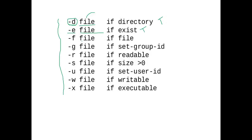To check whether the argument is a regular file, use hyphen-f (-f); if it is a file it returns true, otherwise false. To check whether a file has a group ID set, use hyphen-g (-g); if true it returns true, otherwise false. To check if the file is readable, use hyphen-r (-r); if readable it returns true, otherwise false. To check if the file size is greater than zero, use hyphen-s (-s); if the file size is greater than zero it returns true, otherwise false.